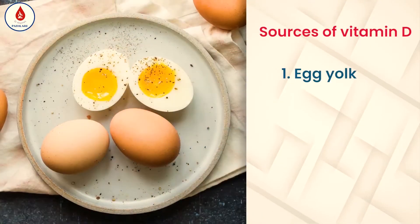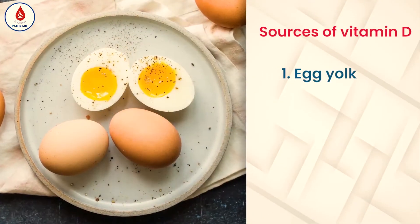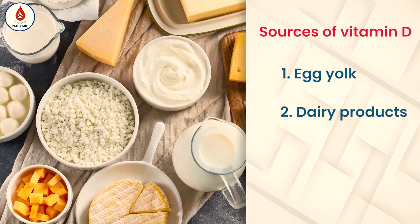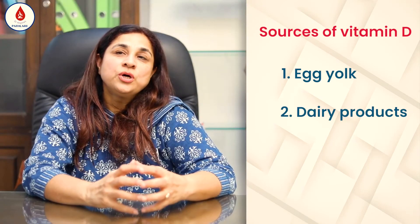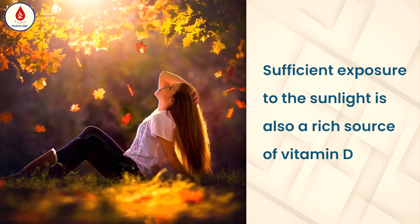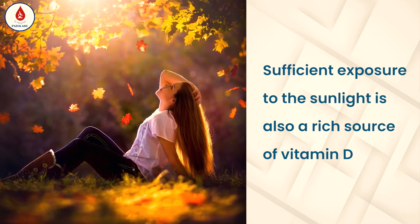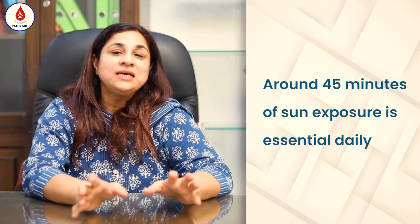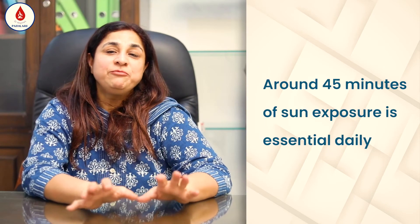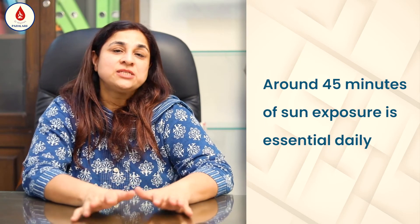What to do to increase the levels of vitamin D? Vitamin D is mainly found in animal source food products like egg yolks, dairy products, and liver. So if you're not having animal sources, right amount of exposure to sunlight is extremely important — at least 45 minutes of exposure to sunlight per day is what is required.